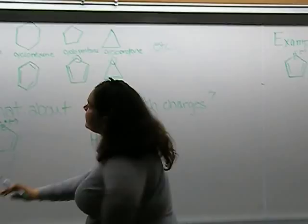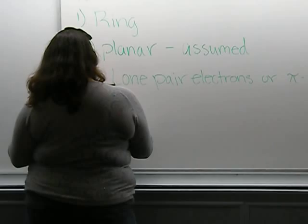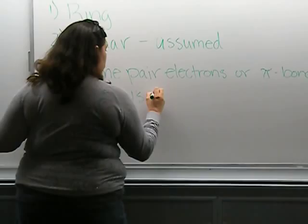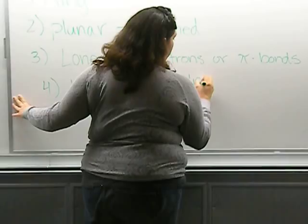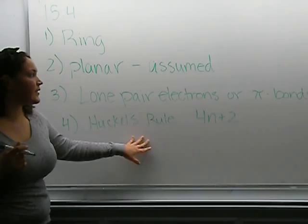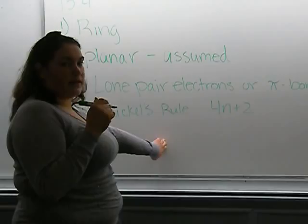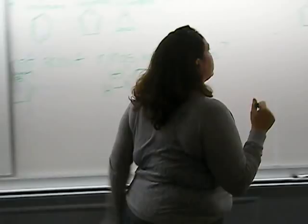The fourth rule is Huckel's law, 4n plus 2. Huckel's rule states how many hydrogens need to be in a ring structure.